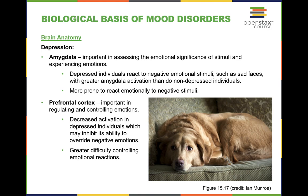When it comes to depression, a couple of brain areas may be involved. The amygdala — important throughout the course for emotion processing and the fear response — is particularly relevant: depressed individuals react to negative emotional stimuli, such as sad faces, with greater amygdala activation than non-depressed individuals, and are more prone to react emotionally to negative stimuli. The prefrontal cortex is involved in regulating and controlling those emotions. As seen with Phineas Gage, when the prefrontal cortex is separated from the limbic system — which contains the amygdala — emotions can fire off rapidly and without regulation.